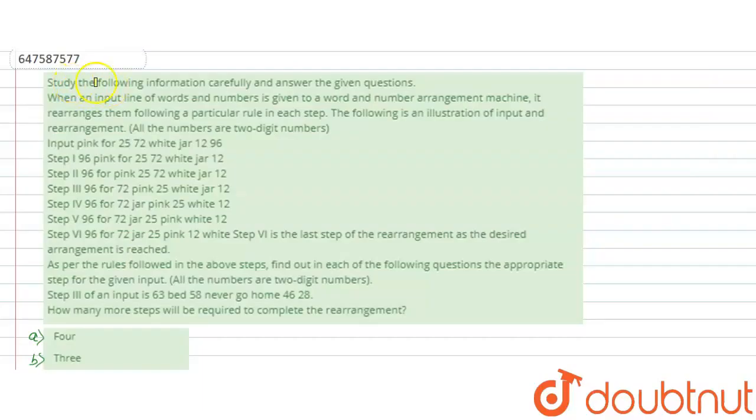The question is: study the following information carefully and answer the given questions. When an input line of words and numbers is given to a word and number arrangement machine, it rearranges them following a particular rule in each step. The following is an illustration of input and rearrangement.